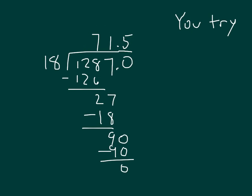Read the whole equation along with me. 1,287 divided by 18 is 71 and 5 tenths.